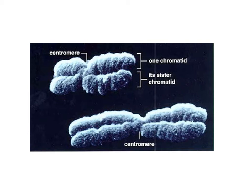Here's another image of a chromosome. The whole thing again is the chromosome. The middle attachment is what we call the centromere. Each side — this is one sister chromatid, and this is the second chromatid.